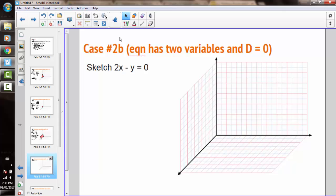In case 2b, now we have two variables and d equals 0. If I try and find the intercepts, the x and y-intercepts, I'm going to quickly see that the origin is one point. So one point on this plane is the origin.